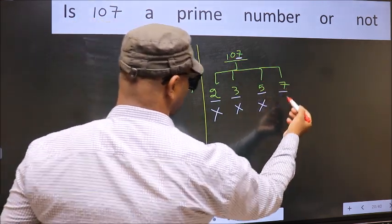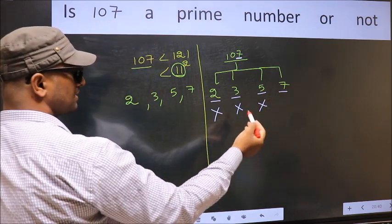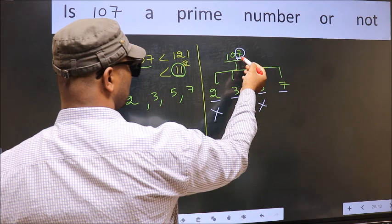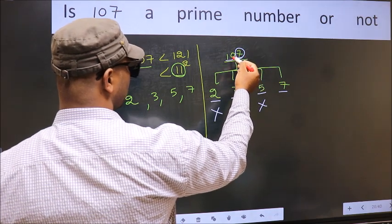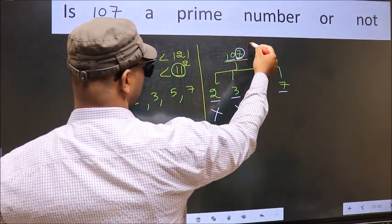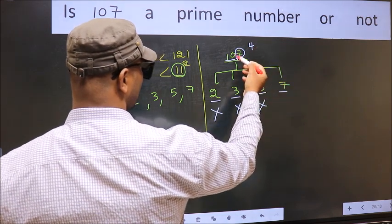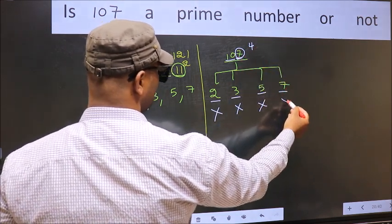Next number 7. To check divisibility by 7, we should double this. 7 into 2 is 14. Subtract from 10. 14 minus 10 is 4. 4 is not divisible by 7, so this number is also not divisible by 7.